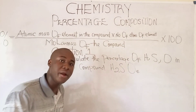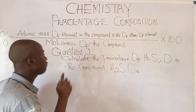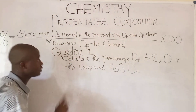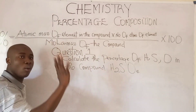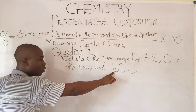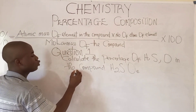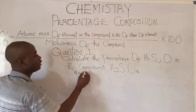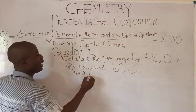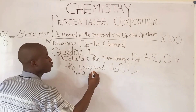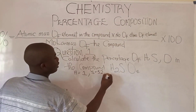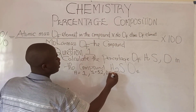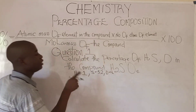It is very easy. First thing first, we need to calculate the overall molar mass of the compound. The atomic mass of hydrogen is 1, the atomic mass of sulfur is 32, and the atomic mass of oxygen is 16.